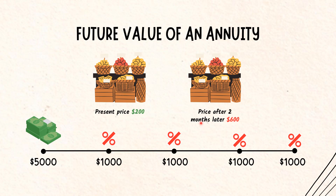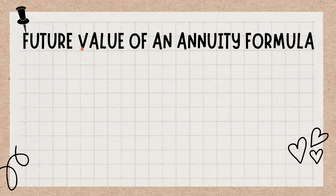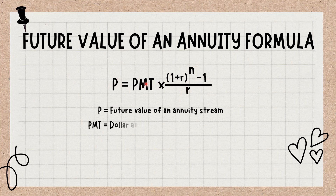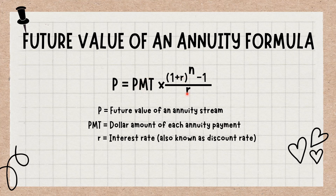Formula and calculation of the future value of an annuity: The formula for the future value of an ordinary annuity is as follows. An ordinary annuity pays interest at the end of a particular period, rather than at the beginning, as is the case with an annuity due. P = PMT × ((1 + R)^N − 1) / R. Where: P = future value of the annuity stream; PMT = dollar amount of each annuity payment; R = interest rate, also known as discount rate; N = number of periods in which payments will be made.